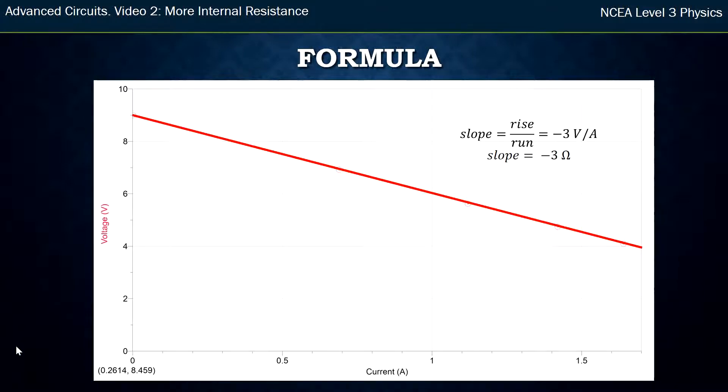The formula I can get from this when you do straight line graphs is y = mx + c. I'm going to substitute: instead of y, my y-axis is voltage; my m is my gradient; my x is my x-axis, which is current; and my c is where it cuts the y-axis, the y-intercept, which looks to be about 9 volts. So now I've got an equation: voltage = -3 ohms × current + 9 volts.